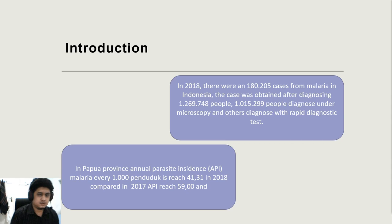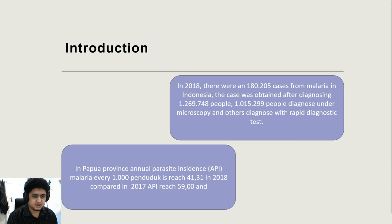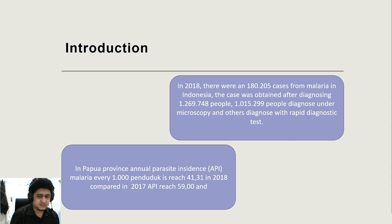First of all, we start with the introduction. Traditionally, malaria disease has been detected by testing and analyzing red blood cells with a microscope. However, the method requires special skills of the researcher and takes a lot of time. Another way to diagnose malaria is by a rapid diagnostic test, but it is advisable to keep testing under the microscope because it provides less information than microscopy tests. Despite the decreasing annual parasite incidence, in most Indonesian regions in Papua province, the disease is still quite prevalent.